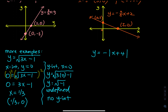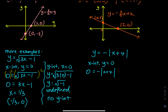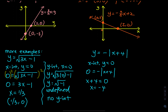For the next equation, to find the x-intercept, let y equal to 0: 0 = negative |x + 4|. The only way to get 0 is if the expression inside the absolute value equals 0, so x + 4 = 0, giving x = negative 4. The x-intercept is (negative 4, 0).